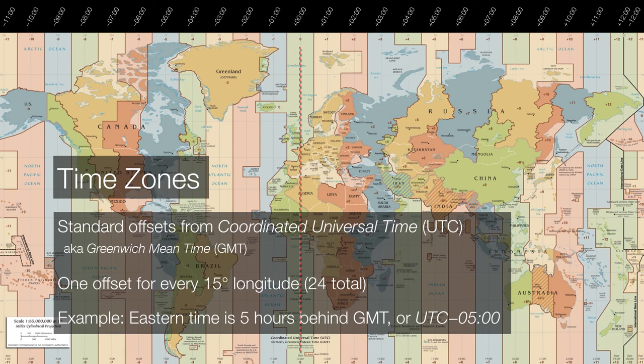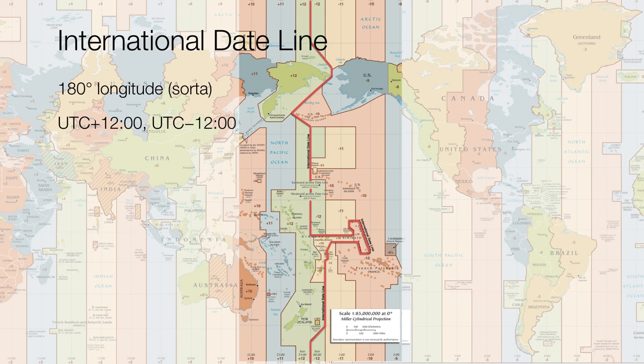At some point we have to define where the new day begins on Earth. By international agreement, the international date line is defined as being approximately 180 degrees longitude — on the opposite side of Earth from the prime meridian. Even this line has been adjusted to allow certain islands and municipalities in the Pacific to exist with their home countries. If you are traveling to the Far East, you add 24 hours as you cross over from the West; if you're traveling from the Far East, say from Japan to Los Angeles, you subtract 24 hours once you cross the international date line.